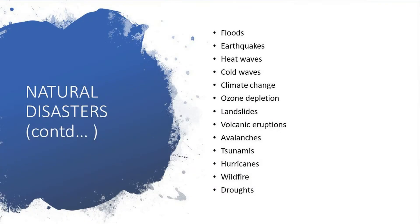These are a few of the natural disasters. It includes floods, earthquakes, heat waves — which is a prolonged period of abnormally hot weather — cold waves, climate change, ozone depletion, landslides, volcanic eruptions — where hot materials from the earth's interior are thrown out of a volcano — avalanches, where a mass of snow, ice or rocks fall rapidly down the mountainside, tsunamis, hurricanes, wildfire, and droughts, to name a few.